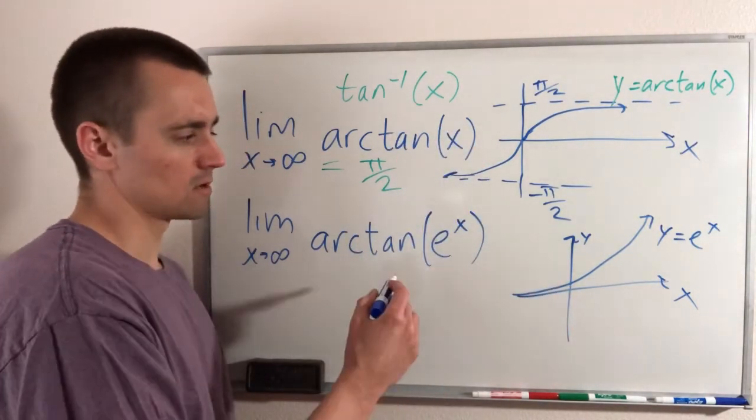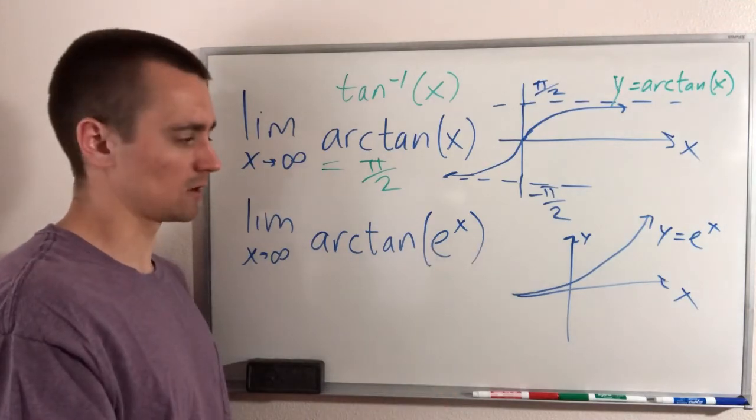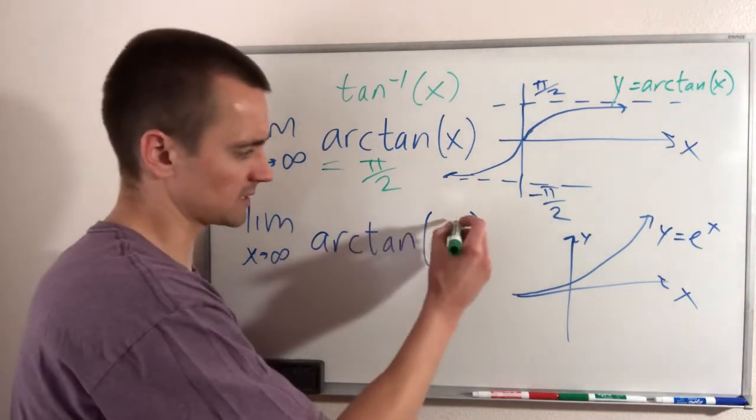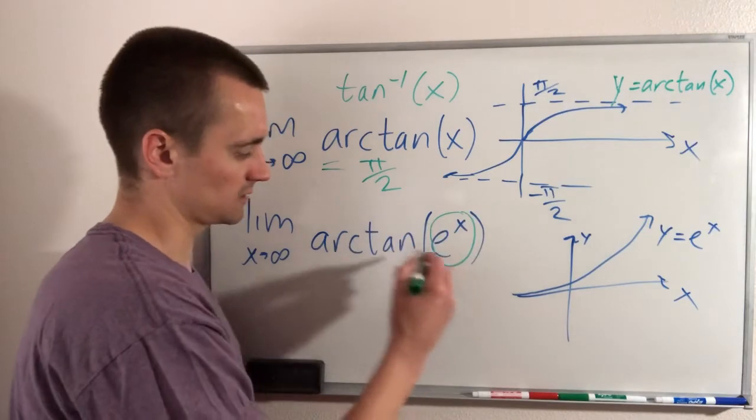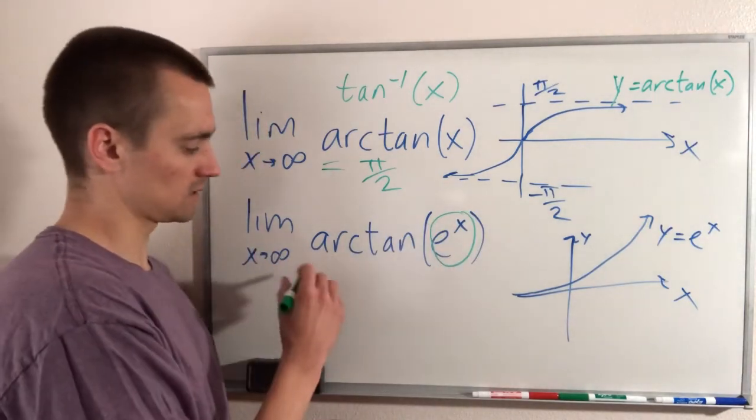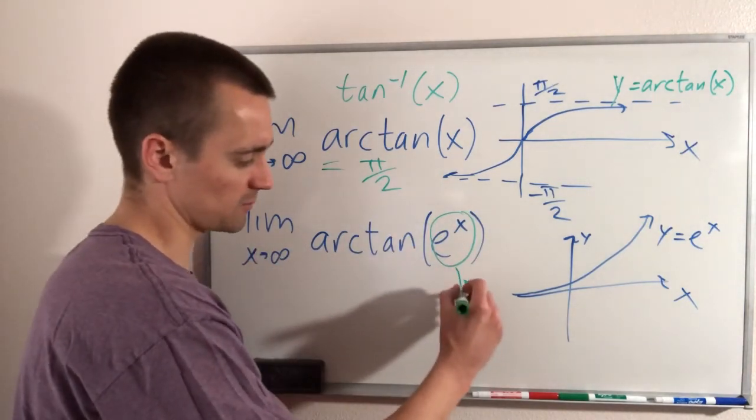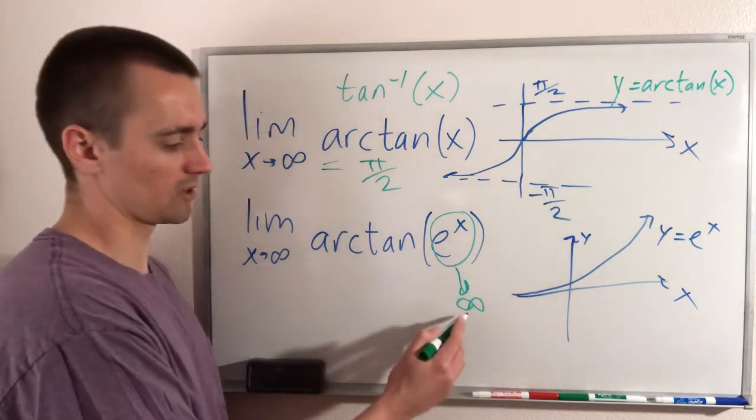So as x goes to infinity, e to the x goes to infinity as well. So basically what we have here is the limit as this piece that's being plugged into arctan of x goes to infinity.